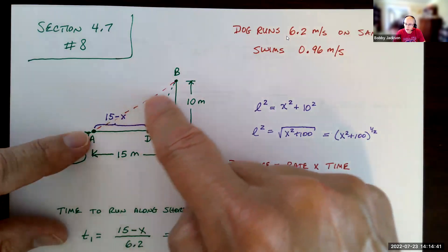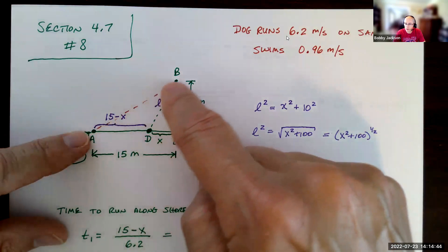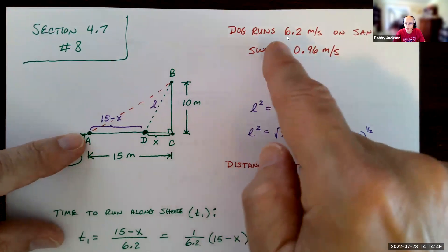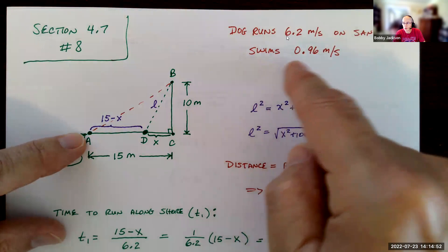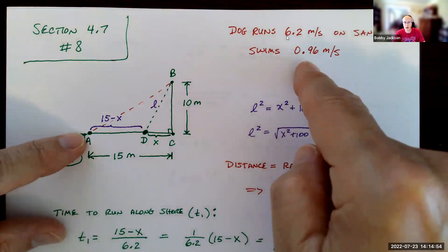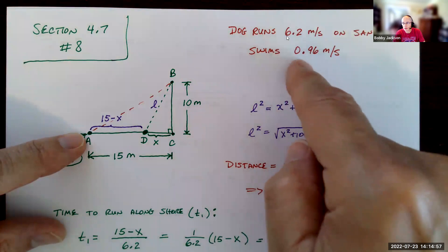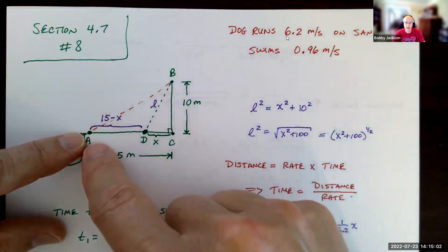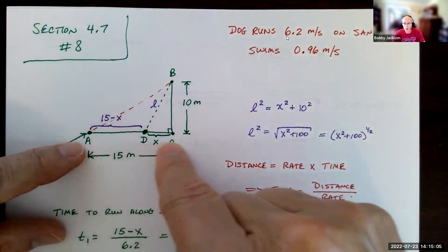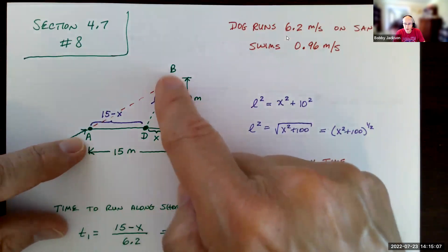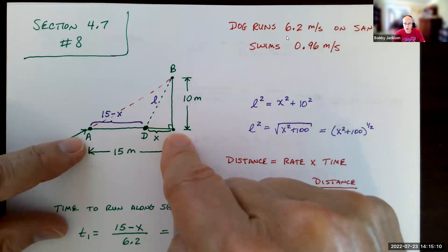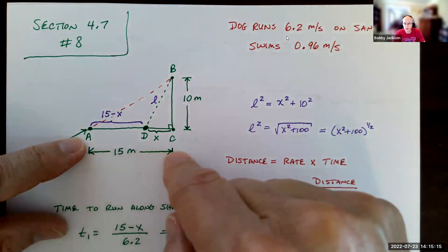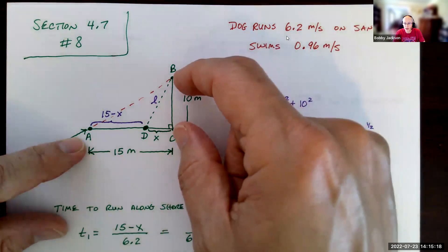That would be the shortest distance, so you'd think the quickest time is to just take the straight-line distance. The problem is the dog runs at 6.2 meters per second but swims at only 0.96 meters per second — less than one meter per second, so six times faster on the beach than in the water. So you might think: let him run all the way from point A to point C, which is perpendicular directly from point B to the shore — the shortest distance from point B to the shore, which is 10 meters. He'd run the 15 meters but then swim the shortest segment in the water.